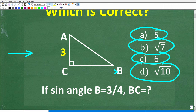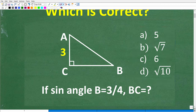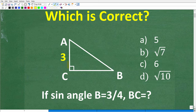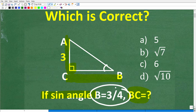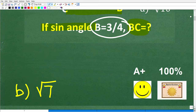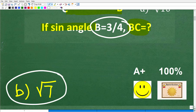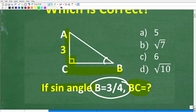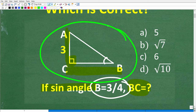Let's take another look at this problem. We have a right triangle — from A to C is 3, and we're looking for the distance BC. The sine of angle B is equal to 3 over 4. The correct answer is B, the square root of 7. If you got this right, you get a happy face, an A plus, 100%, and a certificate of excellence — you're a certified professional expert in basic right triangle trigonometry and geometry.